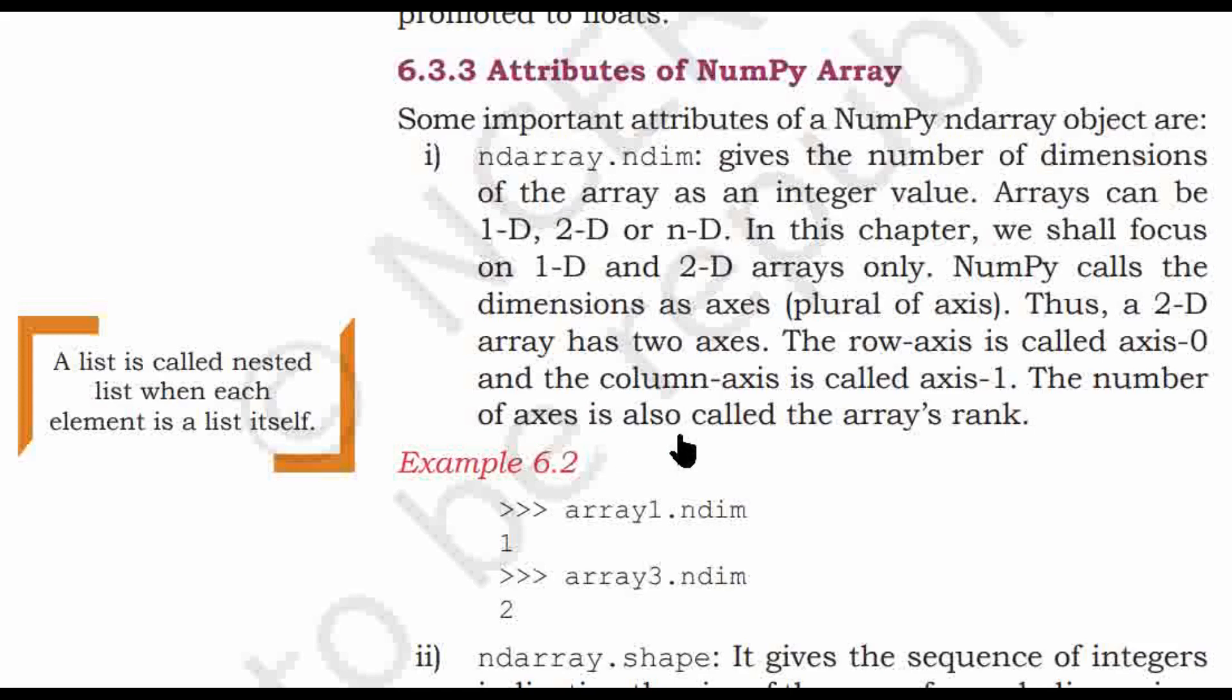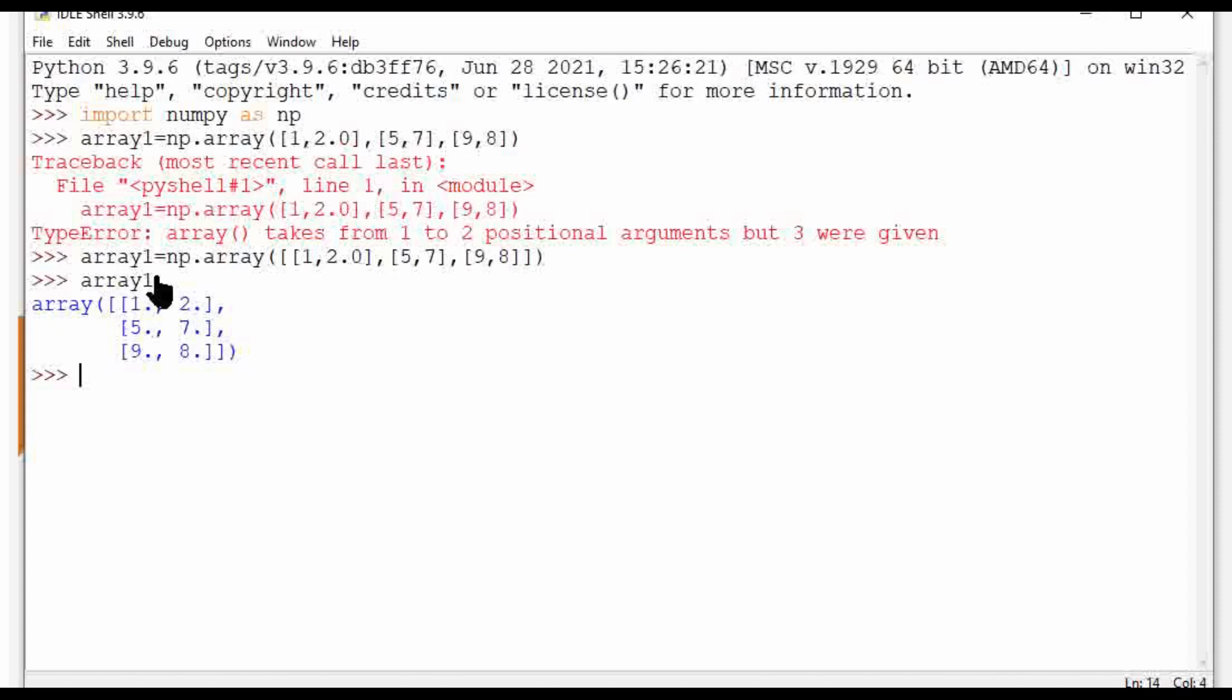Let's do practice. The name of the array is array1. Array1.ndim. Press the enter key. Array1.ndim method is called and it is giving the output 2. It means array1 is a two-dimensional array.